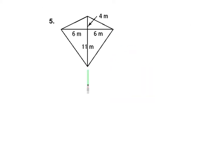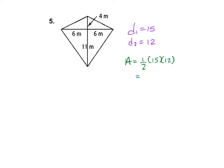Again I have a kite. Diagonal 1 equals 15 feet and diagonal 2 equals 12 feet. So the area equals one-half of 15 times 12, which is 90 square meters.